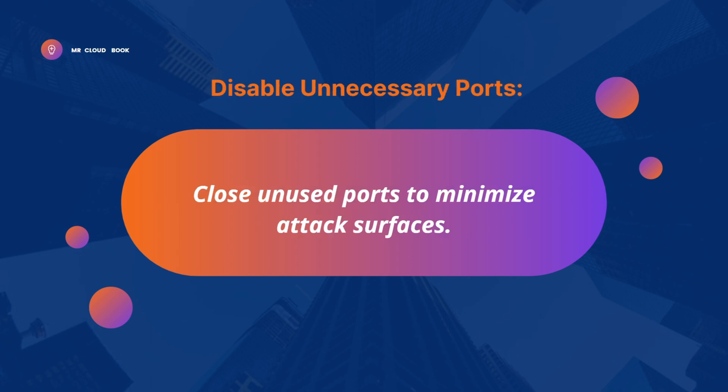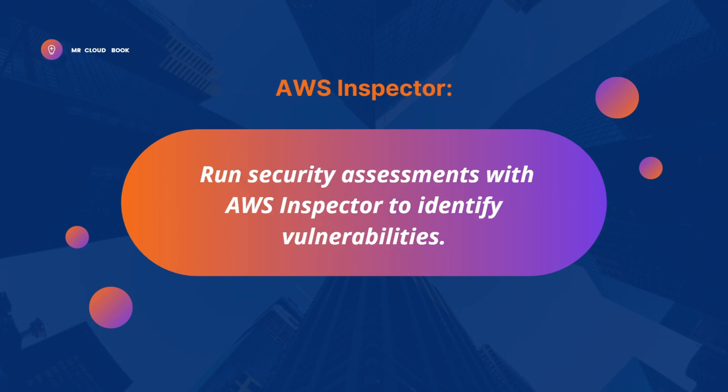The next tip is to disable unnecessary ports. It's like closing doors and windows in your house when you're not using them. By shutting down unused network ports, you reduce the entry points for potential cyber attacks. If you're only using port 8080 for Jenkins, keep ports 22, 80, 443, and 8080 open, and close any others. This makes it harder for attackers to gain access.